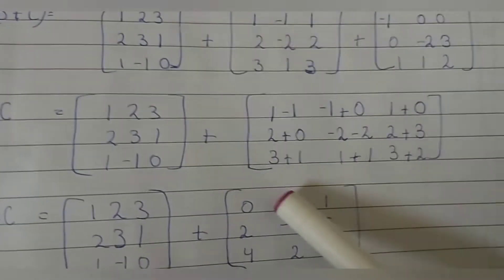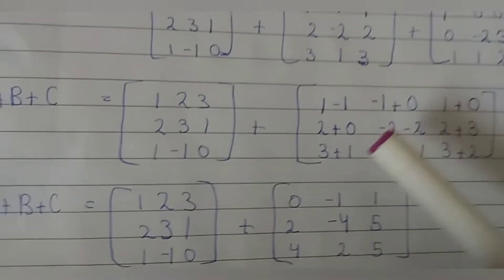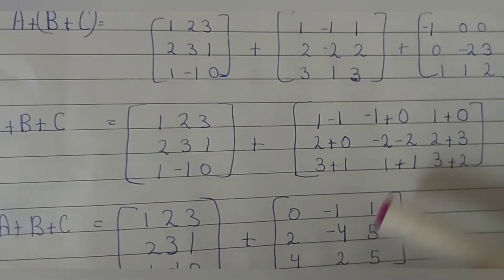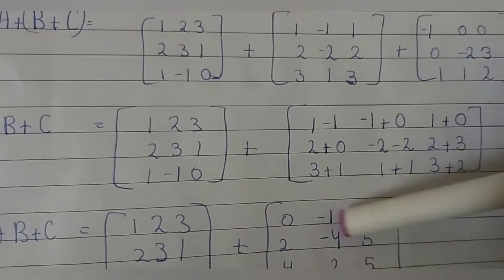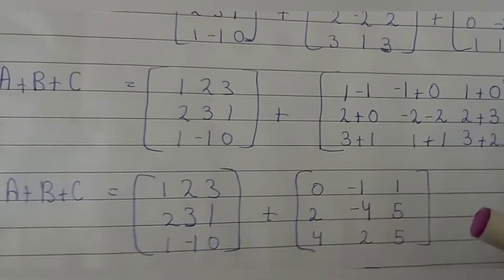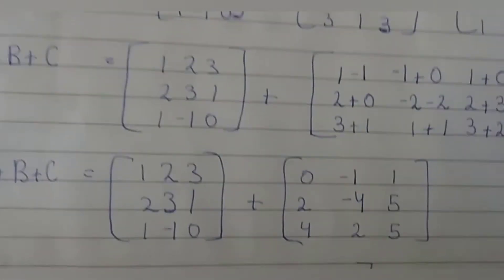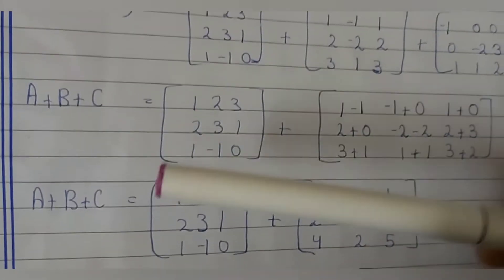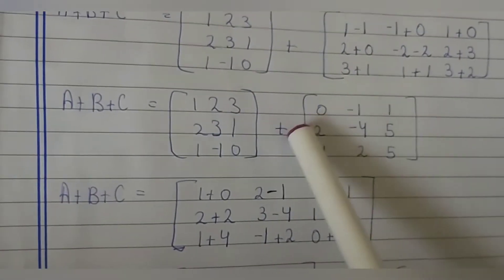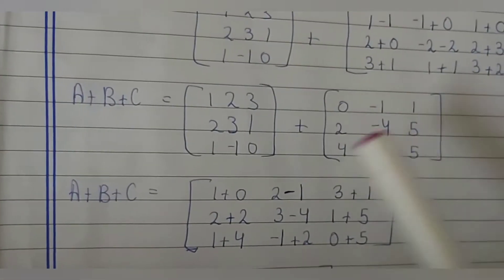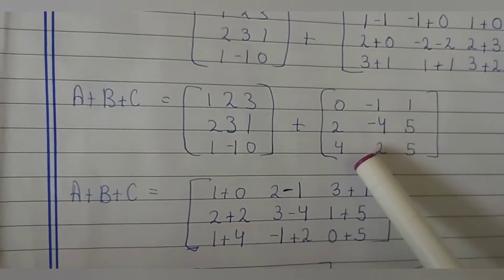We have solved the bracket b plus c. Now we add matrix a to this result. Computing a plus (b plus c): 1 plus 0 equals 1, 2 plus minus 1 equals 1 — wait, 2 minus 1 is 1, but correcting: 2 minus 1 is 2 — 3 plus 1 equals 4, 2 plus 2 equals 4, 3 minus 4 equals minus 1, minus 1 plus 5 equals 6, 1 plus 4 equals 5, minus 1 plus 2 equals 1 — bigger value positive — 0 plus 5 equals 5.